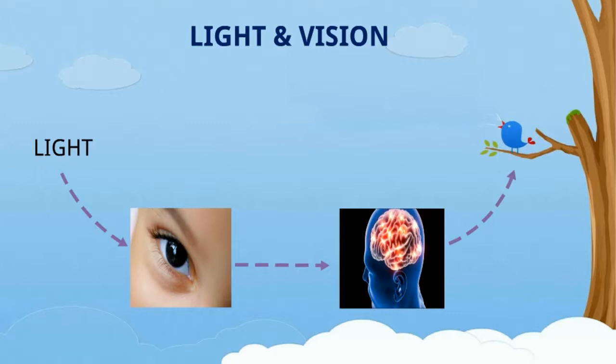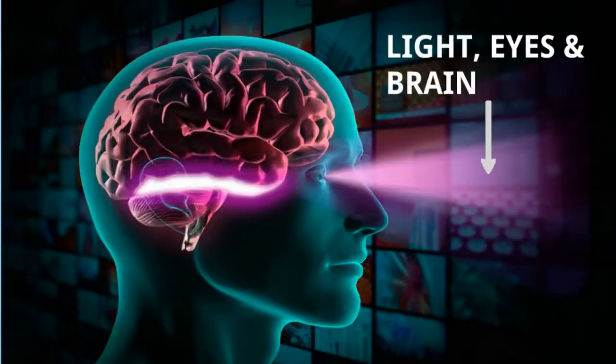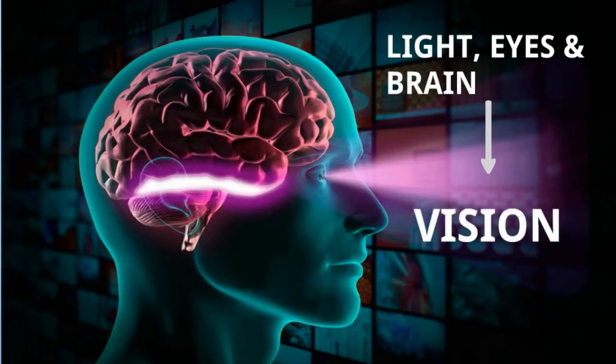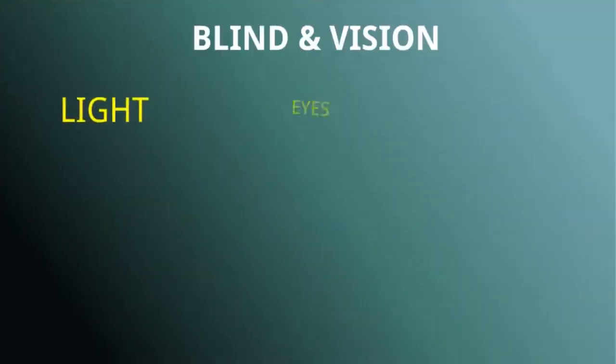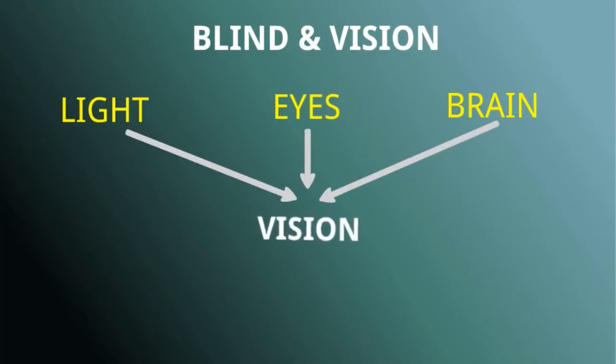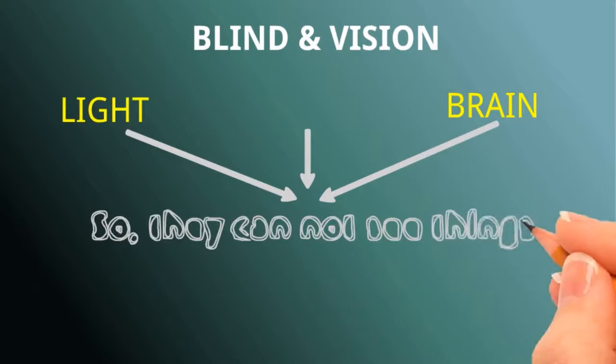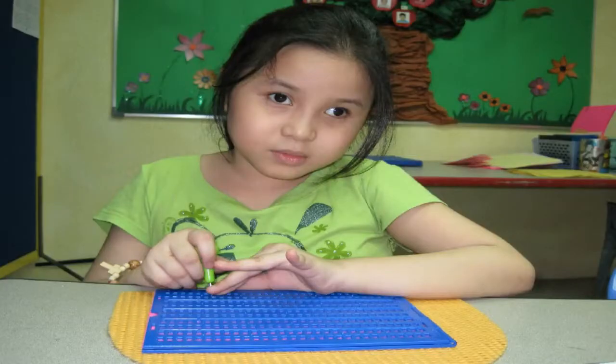So light, eyes, and brain together help for the vision. Blind and vision: we know light, eyes, and brain together help for the vision. But if eyes are not functioning, vision will not be there, and we cannot see anything. Look at this picture. The little girl, she is blind. Her eyes are not functioning well.